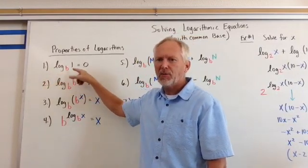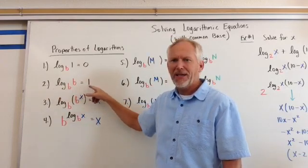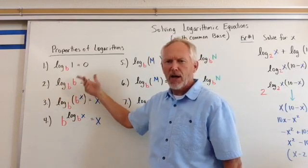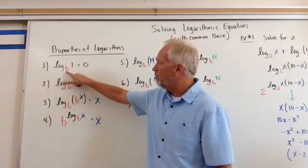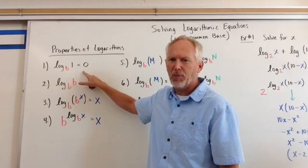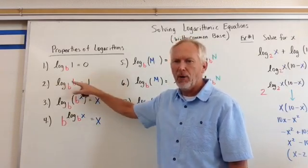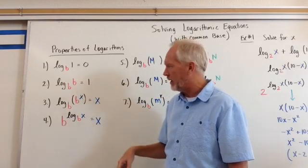The first property is log base b of 1 equals 0, log base b of b equals 1. Now you might be asking, how do these work? Well, basically we say b to the what power is 1? Well, b to the 0th power is 1. So that's how we say this. b to what power is b? Well, b to the first power is b.